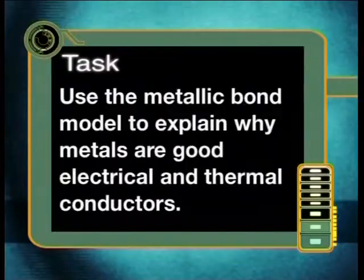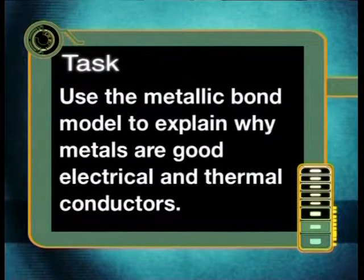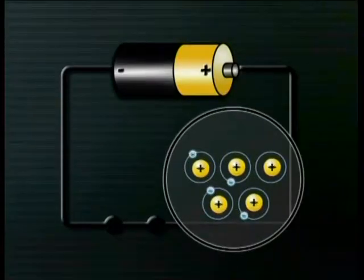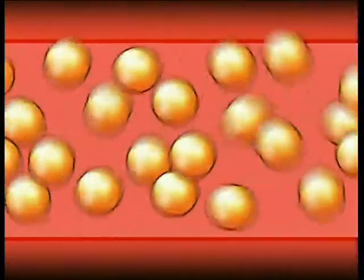Now, for your task today, I want you to use the microscopic model of the metallic bond to explain two important properties of metals we have discovered. Use the metallic bond model to explain why metals are good electrical and thermal conductors. To help you, here are two tips: electrical conductors allow charge to flow, and when the temperature increases, the kinetic energy of particles increases too.